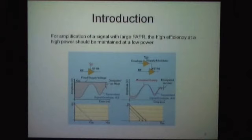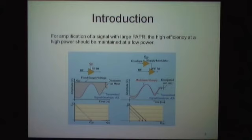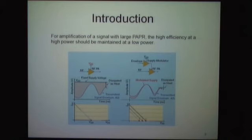Concept-wise, the Envelope Amplifier is quite simple. We provide a dynamically varying supply to the RF PA so that there is little power dissipation, as shown by the shaded gate area. But it doesn't solve the problem completely — it transforms the problem of enhancing the efficiency of the RF device to enhancing the efficiency of the Envelope Amplifier. This is increasingly true as we go to wider band applications like 20 MHz LTE, where achieving 75–80% efficiency is not easy.